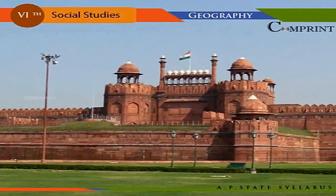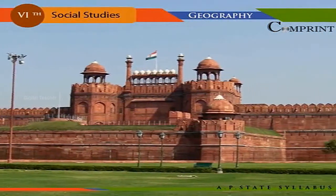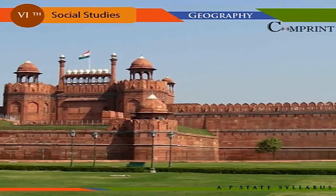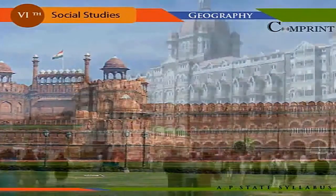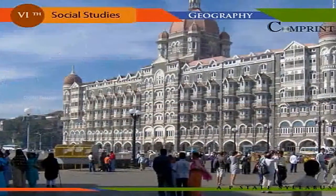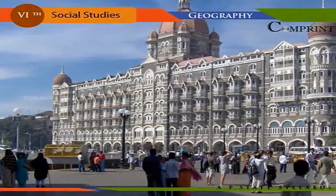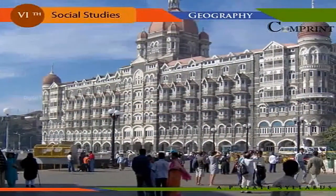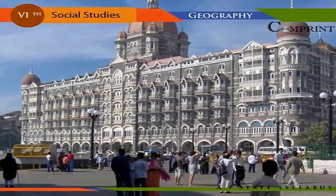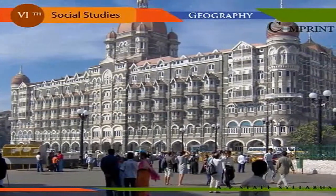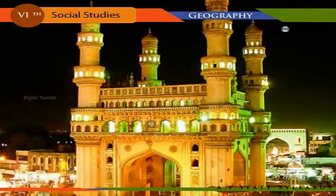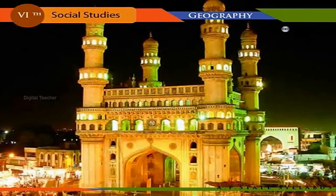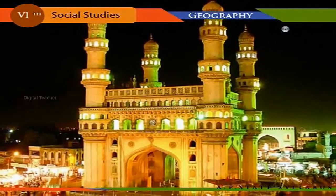India, located in southern Asia, has Delhi, Mumbai, Kolkata, Chennai, Hyderabad, and Bengaluru as its important cities. As people from different countries and cultures live in Delhi, it is called a cosmopolitan city.